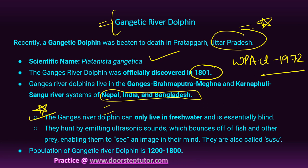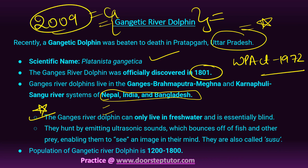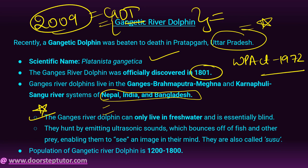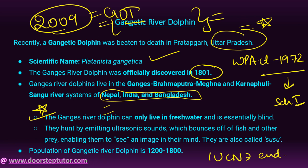The Gangetic River Dolphin is a reliable indicator of the health of the entire river ecosystem. It was recognized as the National Aquatic Animal in 2009 by the Government of India. Threats include bycatch, pollution, and dams. Conservation status: under the Indian Wildlife Protection Act 1972 — Schedule I; IUCN — Endangered; CITES — Appendix I.